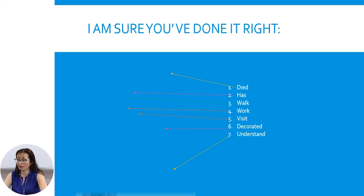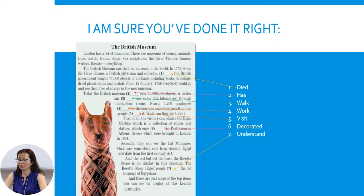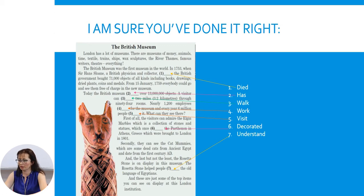I'm sure you've done it right. The British Museum was the first museum in the world. In 1753, when Sir Hans Sloane, a British physician and collector, died, the British government bought 71,000 objects of all kinds, including books, drawings, dried plants, coins and medals. Today, the British Museum has over 13 million objects. A visitor can walk 2 miles through 94 rooms. Nearly 1,200 employees work for the museum and every year 6 million people visit it.